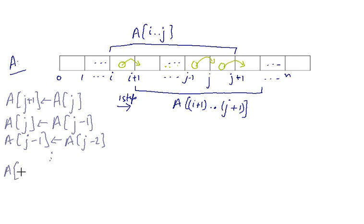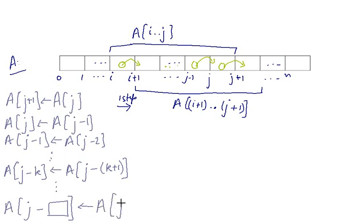And somewhere in between we get that A[j-k] is updated by A[j-(k+1)]. And at last we will get A[j-□] (let that be a box for now) is updated by A[j-(□+1)].